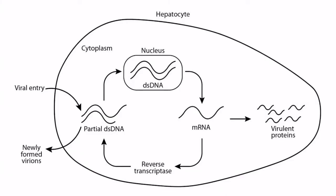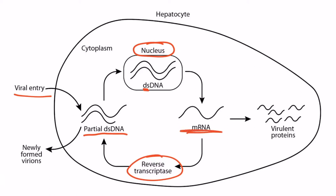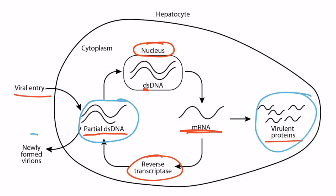This diagram depicts an abbreviated replication cycle of hepatitis B. The virus enters the cell as partially double-stranded DNA, enters the nucleus, and gets repaired by host DNA polymerase to become fully double-stranded. RNA polymerase then makes mRNA, which leaves the nucleus and enters the cytoplasm, where it is translated into virulent proteins. Reverse transcriptase is made from mRNA and then acts on the mRNA to build partially double-stranded DNA. This new DNA can be packaged with virulent proteins to form new virions and perpetuate the life cycle of hepatitis B. Reverse transcriptase is therefore critical to complete the life cycle of hepatitis B.